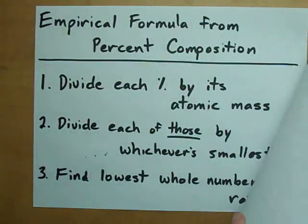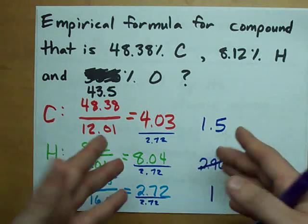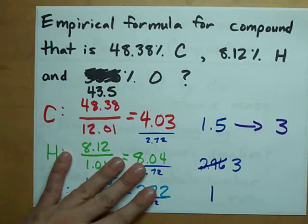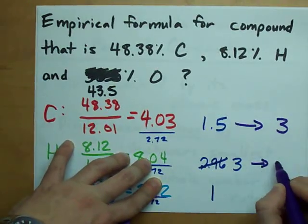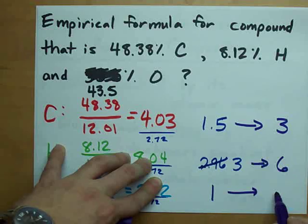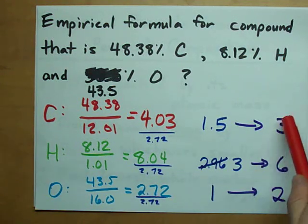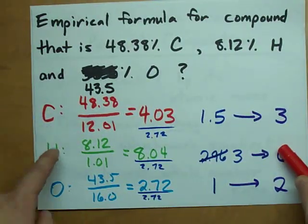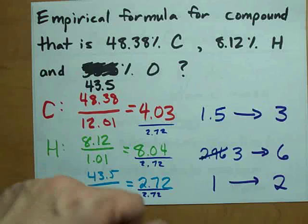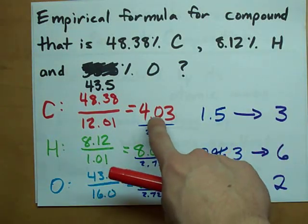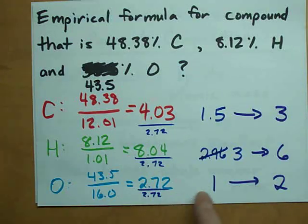And the last step is to find the lowest whole number ratio. But this is still a decimal, not a whole number. How can we get rid of a 0.5 or a half? The answer is by multiplying by 2. If we multiply this by 2, we get 3. If we multiply this by 2, we get 6. If we multiply this by 2, we get 2. What this means is that we have 3 carbons for every 6 hydrogens for every 2 oxygens.